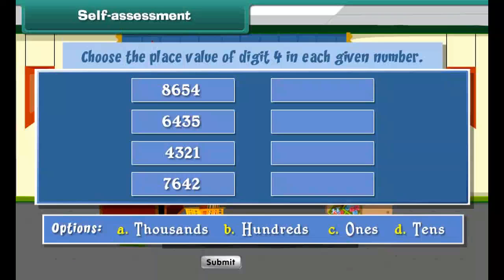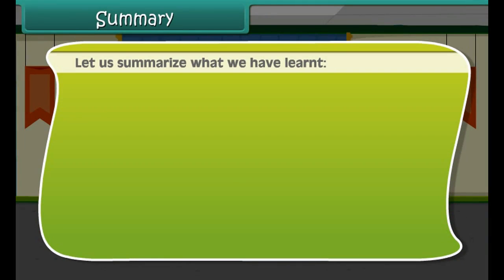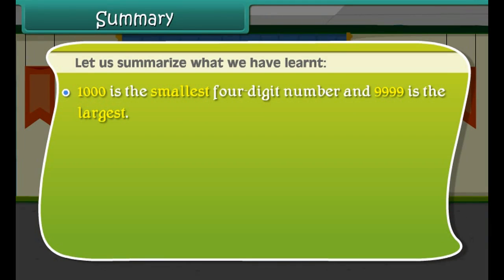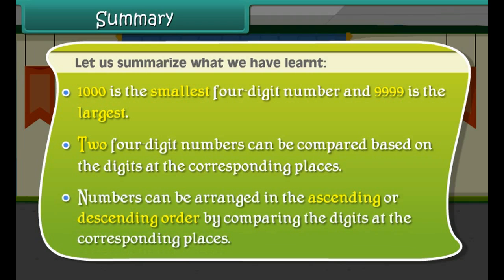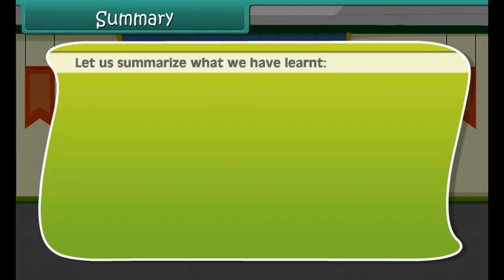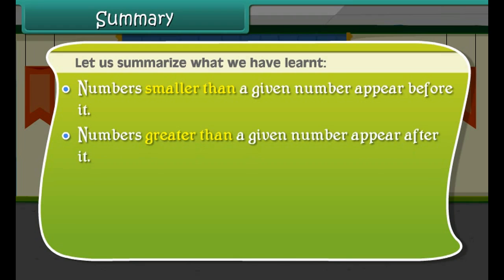Let us summarize what we have learned. One thousand is the smallest four-digit number and 9999 is the largest. Two four-digit numbers can be compared based on the digits at the corresponding places. Numbers can be arranged in ascending or descending order by comparing digits at corresponding places. Numbers smaller than a given number appear before it, and numbers greater than a given number appear after it.